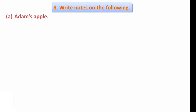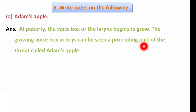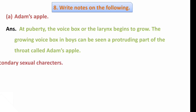Next question: Write notes on Adam's apple. At puberty, the voice box or larynx begins to grow. The growing voice box in boys can be seen as a protruding part of the throat, called Adam's apple.